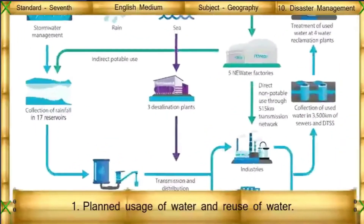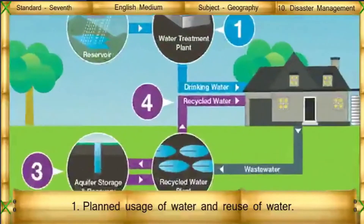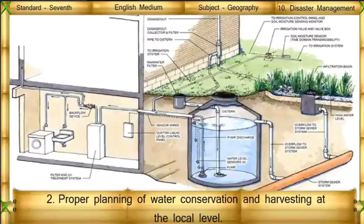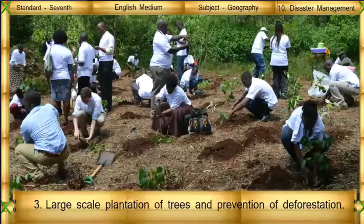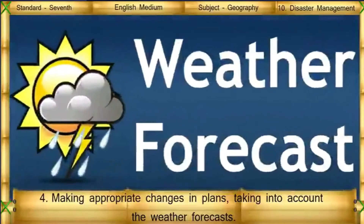What can we do to ease the severity of famine? Planned usage and reuse of water. Proper planning of water conservation and harvesting at a local level. Large-scale plantation of trees and prevention of deforestation. Making appropriate changes in crops, taking into account the weather forecast.